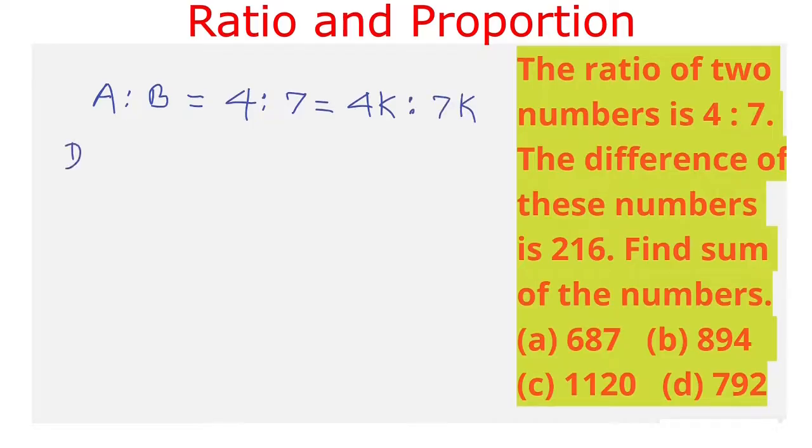Now difference of these two numbers, difference equals 7k minus 4k is 3k. And this is given that the difference 3k is equal to 216.